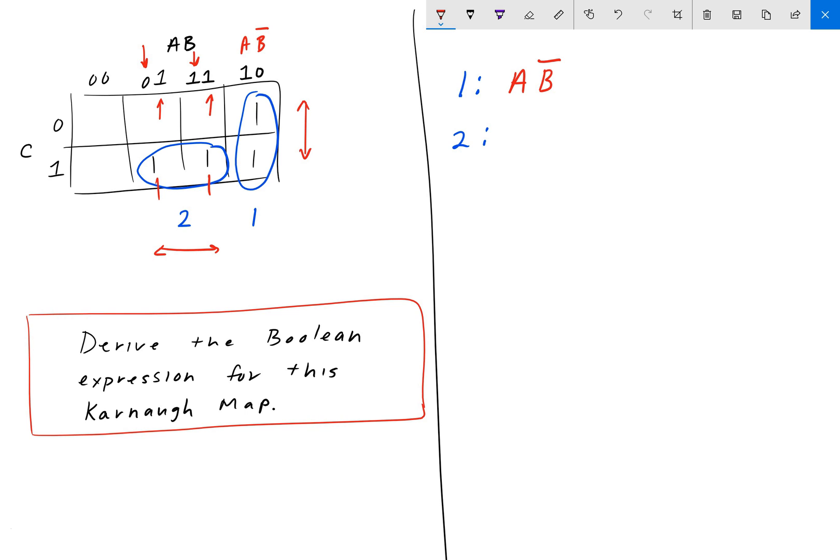So we write that, and they're both ones, so we write that as BC. So the Boolean expression here, I'll call y, is equal to just the OR of these groups. So that would be A B not, or BC. And that is the Boolean expression.